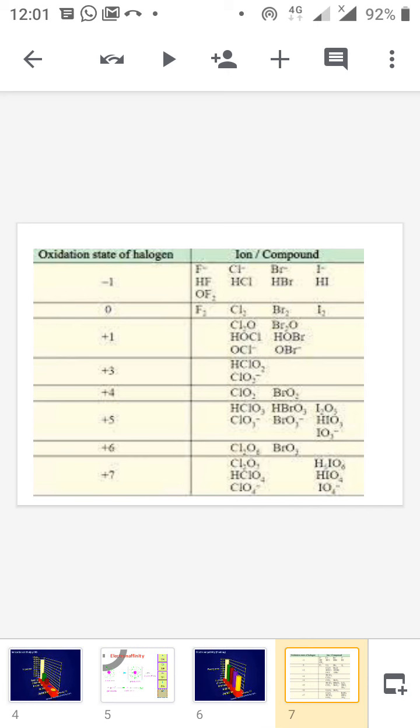Then oxidation states. Fluorine shows an oxidation state of -1. Chlorine shows all oxidation states. Bromine shows all oxidation states except +7. Iodine does not show +3 and +6 oxidation states.